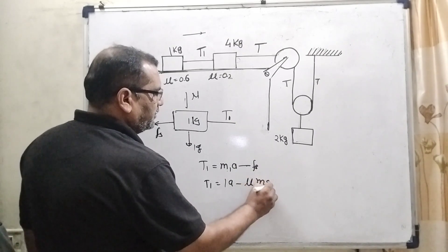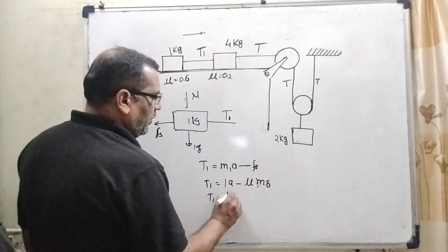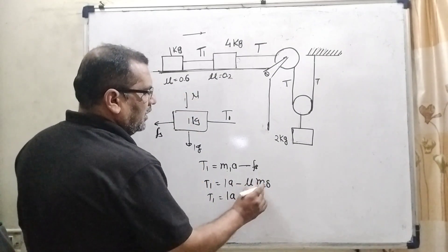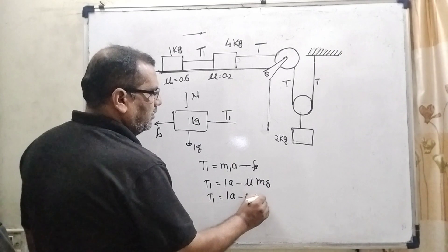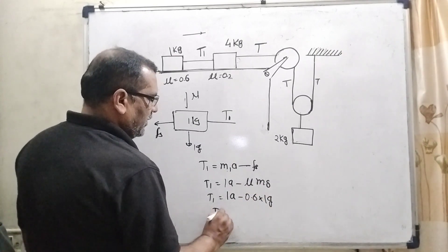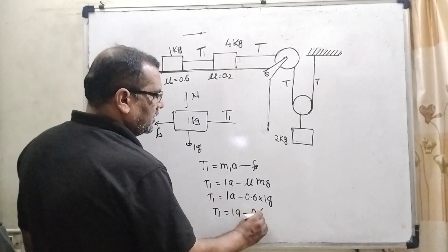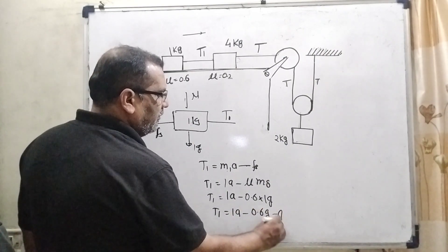So here T1 equal to A mu that is given 0.6 M that is 1 kilogram and g. So here the first equation A minus 0.6 G. It is the first equation.